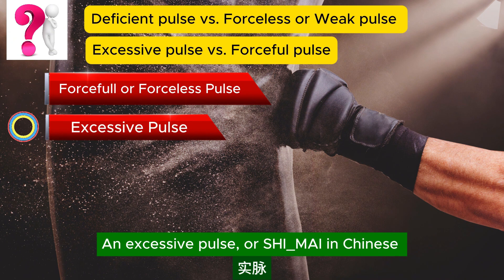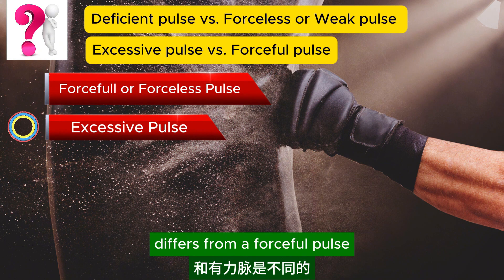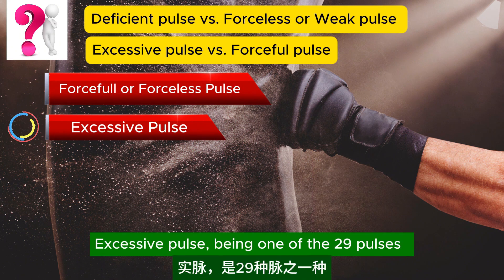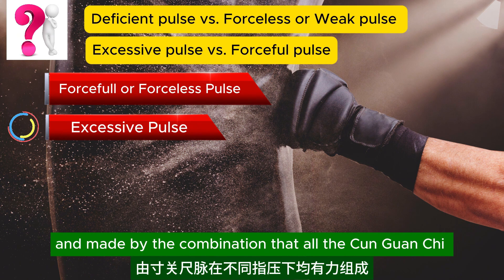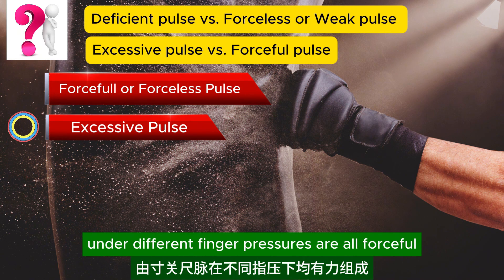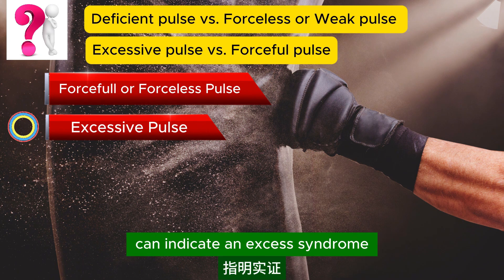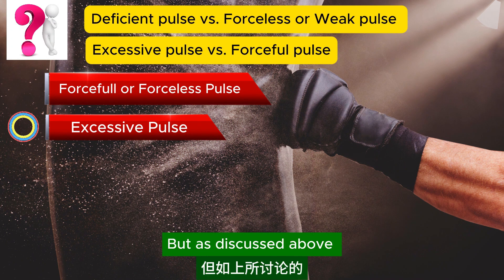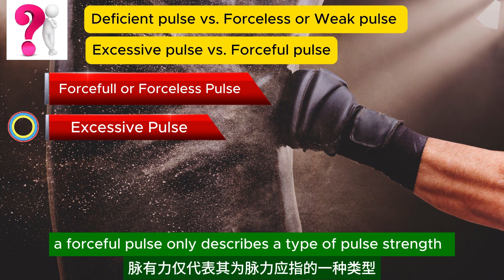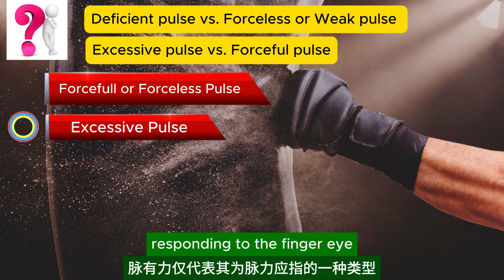An excessive pulse, or shi mai in Chinese, differs from a forceful pulse. Excessive pulse, being one of the 29 pulses, is defined by the combination of all cun, guan, chi positions and different finger pressures all being forceful, and can indicate an excess syndrome. But a forceful pulse only describes a type of pulse strength responding to the finger — it is a descriptor, not a specific named pulse.